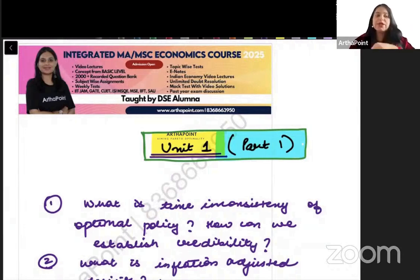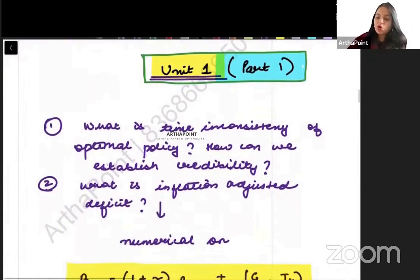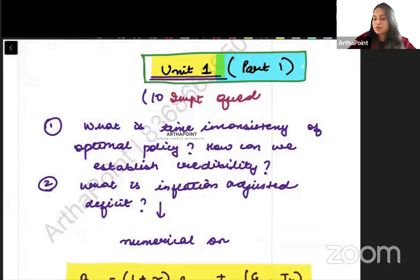Unit 2 is a very small unit and that should be picked up at the last. So today I am going to give you a list of 10 important questions. This is part 1 beta. I will give you 5 more important questions but this is 10 important questions from unit 1.